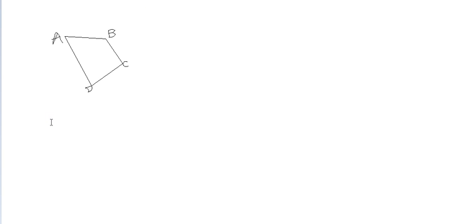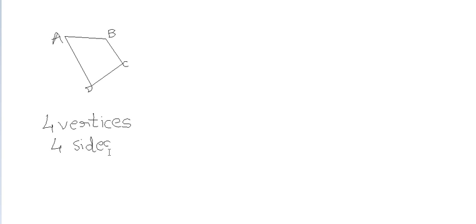Every quadrilateral has 4 vertices, which are its corners. So in this quadrilateral, the vertices are points A, B, C, and D. A quadrilateral also has 4 sides, which are its edges. The 4 sides are side AB, side BC, side CD, and side DA.